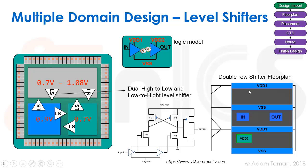These level shifter cells often require double or triple standard cell rows, which is manageable if there's a special site defined for the place and route tool. However, in any given region of standard cell rows, only a single VDD is available — either VDD 1 or VDD 2. When VDD 2 must enter the cell, it has to be routed as a signal pin, which is called secondary power routing. This is very non-trivial, especially with respect to IR drop on these voltages.